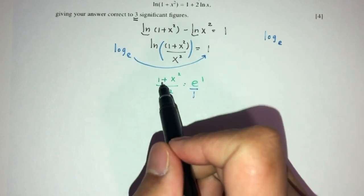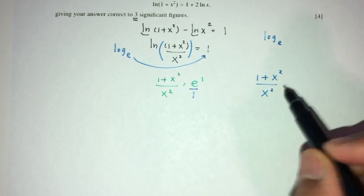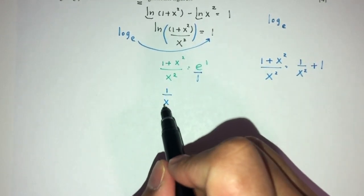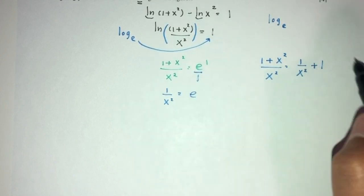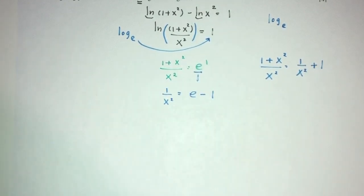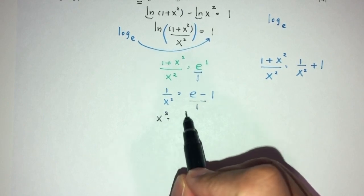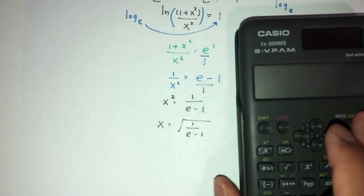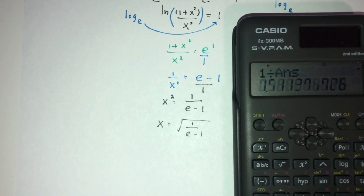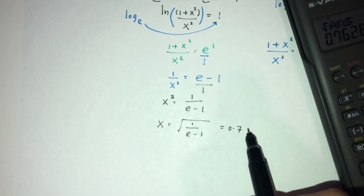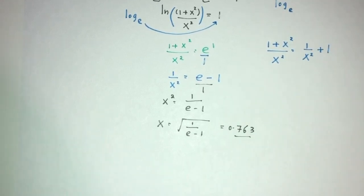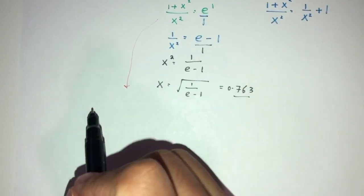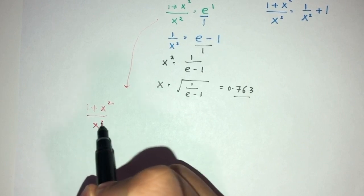We can simplify the left side: (1 plus x squared) over x squared is the same as 1 over x squared plus 1. So we have 1 over x squared plus 1 equals e, which gives 1 over x squared equals e minus 1. Therefore x squared equals 1 over (e minus 1).